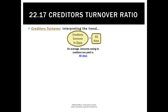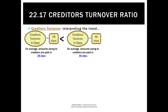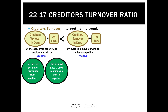Interpreting the trend: if it went from 46 days down to 28, this is a good trend in one sense because we've decreased the time it takes to pay creditors, and based on that we're probably more likely to get discounts depending on the credit terms from our suppliers. We'll also have a good relationship with suppliers — they'll want to sell to us, let us buy on credit, charge no interest, and maybe even offer lower prices because we always pay on time.